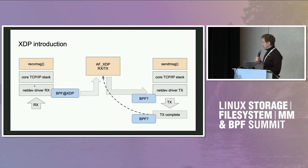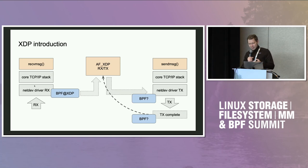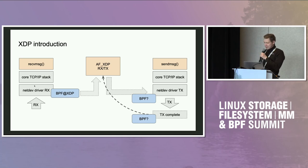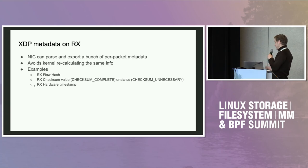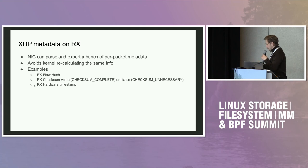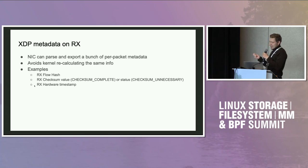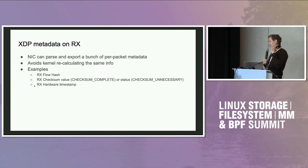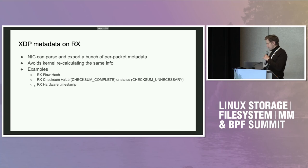Until recently the XDP hook was missing a bunch of metadata, and now that we have it, the question is: should we have something similar for TX? There might be a transmit side hook and a transmit complete side hook. Starting with receive side metadata — when you receive a packet, along with the data you can get metadata from the NIC. With 100G/200G it's too expensive for the CPU to do everything, so the NIC offloads things like flow hash, checksum, and hardware timestamps.